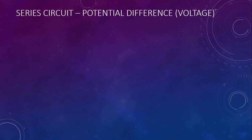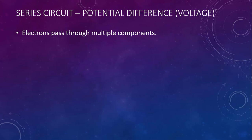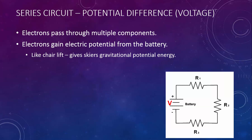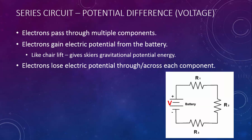Let's begin with series circuits and discuss potential difference or voltage. Electrons passing through multiple components gain electric potential from the battery — just like a chairlift, which gives skiers gravitational potential energy. Electrons are going to lose electric potential through or across each component.